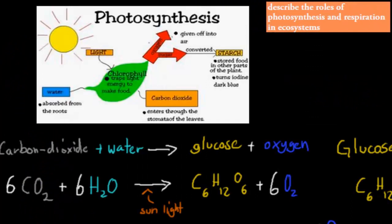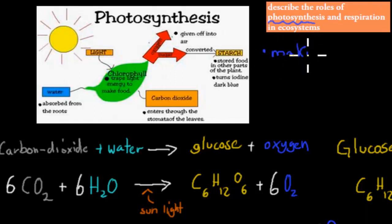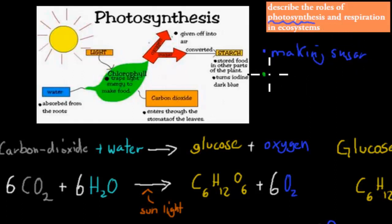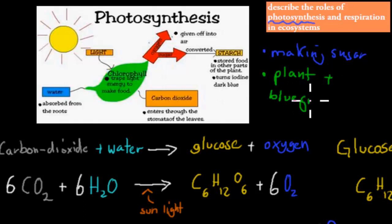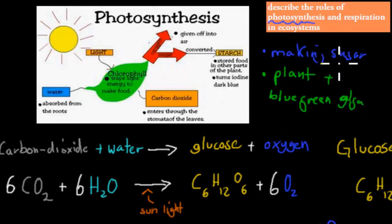Now I'll cover the actual dot point. Photosynthesis is all about making glucose, or making sugar. Making sugar happens in plants — specifically, photosynthesis happens in plants and something called blue-green algae, which is actually a bacteria. These are the only organisms that can do photosynthesis and make their sugar this way.